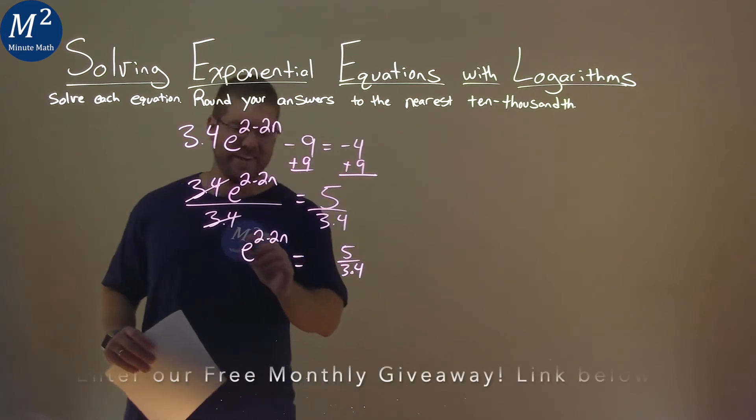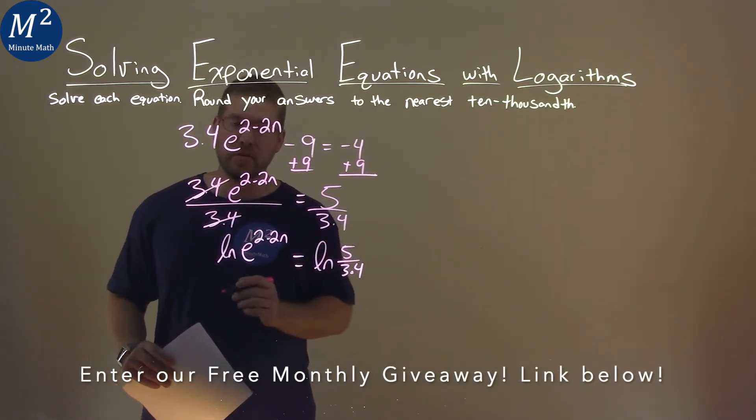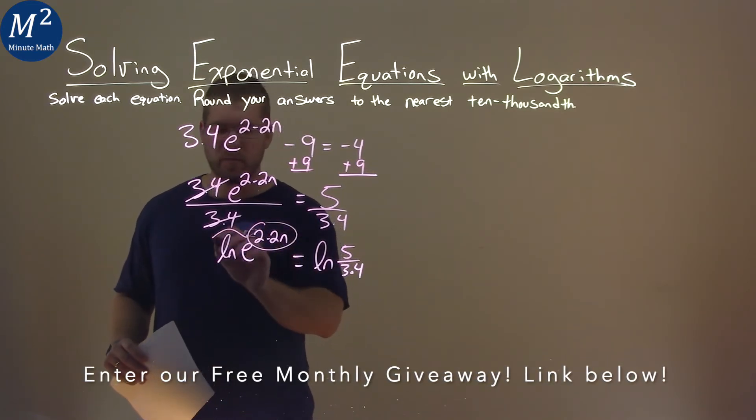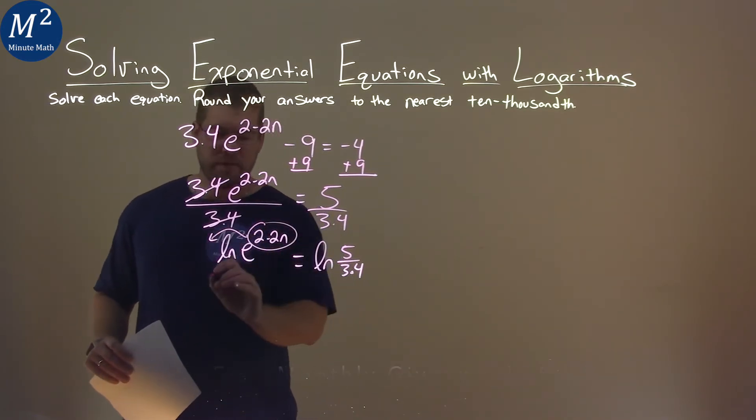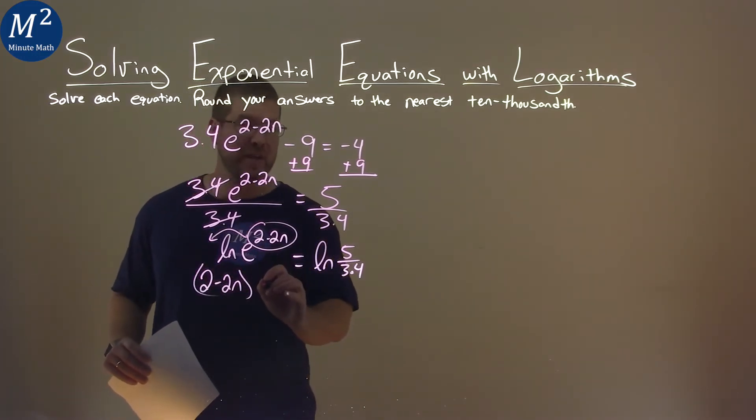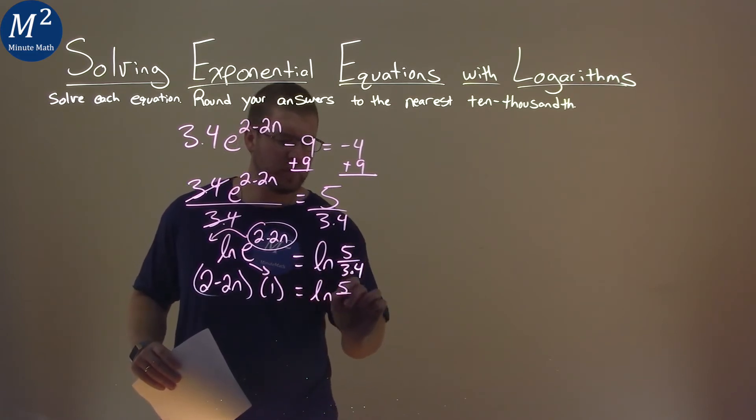Now, our rules with logarithms is we can take the natural log of both sides of the equation here. What does that do? That allows us to take this exponent and bring it out front. We have 2 minus 2n now times the natural log of e, which is, well, natural log of e is 1, and that's equal to natural log of 5 over 3.4.